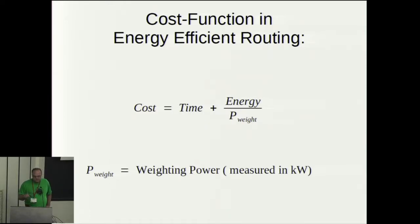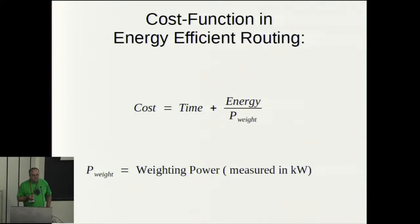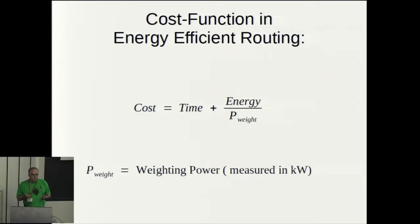The interesting case is to put a reasonable value for P-weight. Maybe you put 30 kilowatts, meaning you are willing to spend an extra 30 kilowatt-hours of energy to save one hour of travel time. 30 kilowatt-hours is a reasonable number because it translates to about 6 liters of fuel, which is 8 euros — roughly the minimum salary in Europe. So this seems to be a reasonable weighting factor.